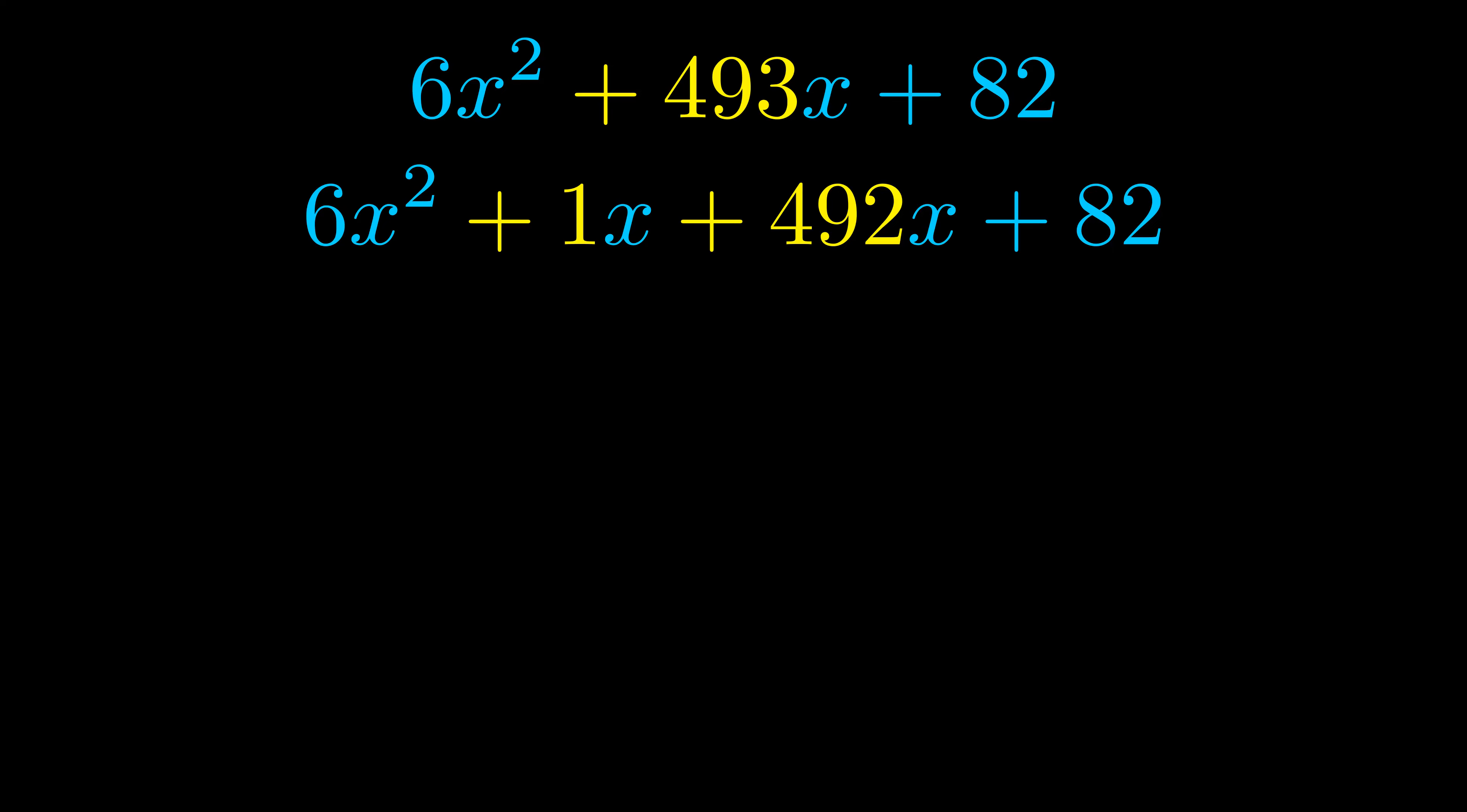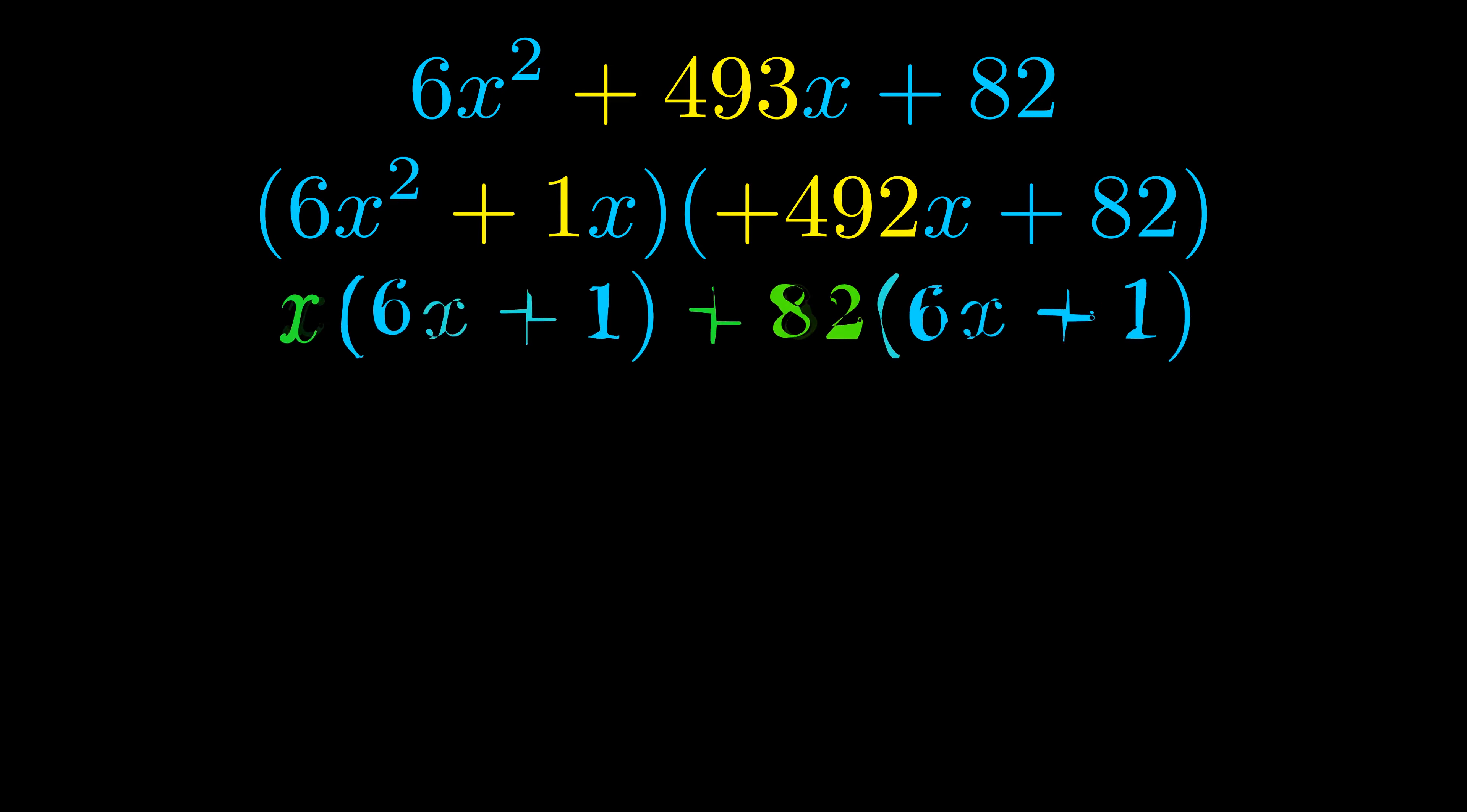Once we've done this we go ahead and we put parentheses around the first term and the last term. And we do that so that we can take the greatest common factor out of both terms. We can see the greatest common factor is now outside in green. Notice also how what remains inside of the parentheses is the same in both cases.